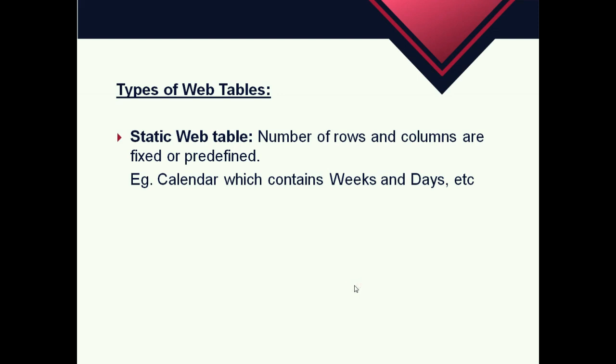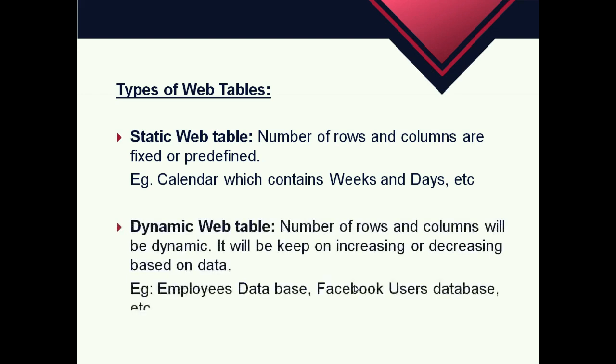Another type of web table is a dynamic table, where the number of rows and columns will be dynamic — it will keep on increasing or decreasing based on the data updated. For example, an employees database or a Facebook user database. As we know that every second users are increasing in Facebook, so the Facebook user database is updating every second — it's a dynamic table.